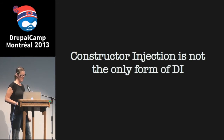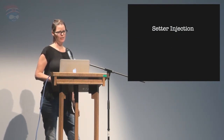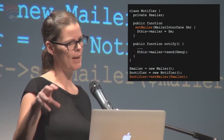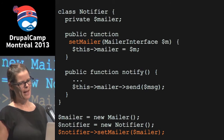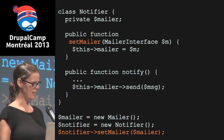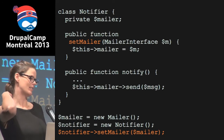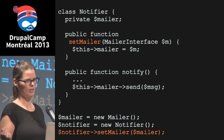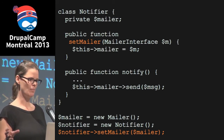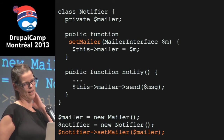Constructor injection is not the only form of dependency injection — it's by far the most common, and certainly in Drupal 8. There's also setter injection: rather than passing dependencies in the constructor, you'd have a setter method — for example, a setMailer method that takes the mailer object and sets it as the instance variable. The problem is that until you call the setter method, the class is essentially useless. But setter injection can be helpful if you want to provide a sane default for a property and then be able to override it using a setter method.